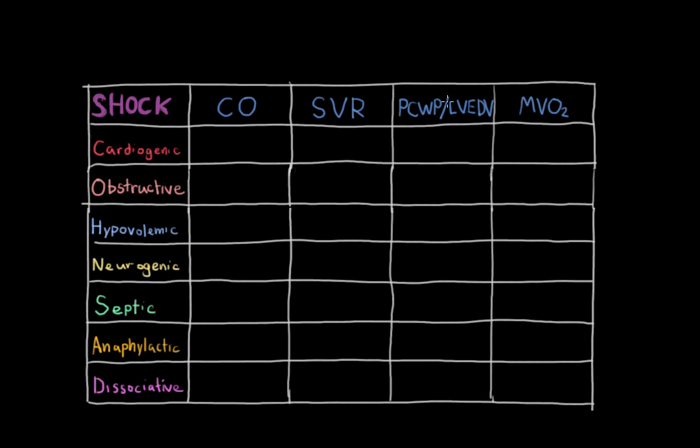PCWP stands for pulmonary capillary wedge pressure. And this is measured with a pulmonary artery catheter. It tells you how well the heart is able to pump fluid forward. If the heart is struggling or if there's some blockage or something preventing blood from being pushed forward by the heart, then PCWP, pulmonary capillary wedge pressure, will be elevated.